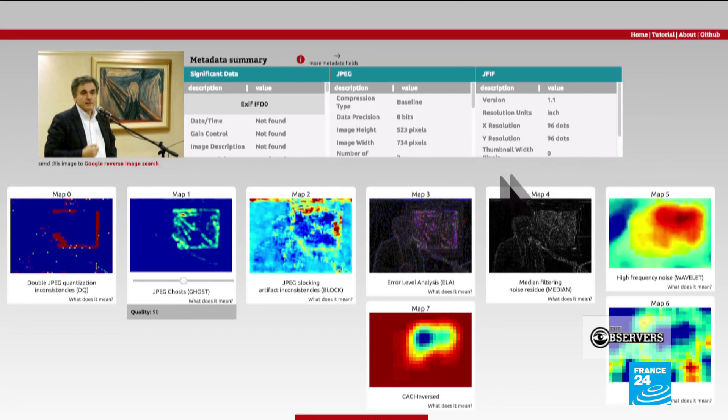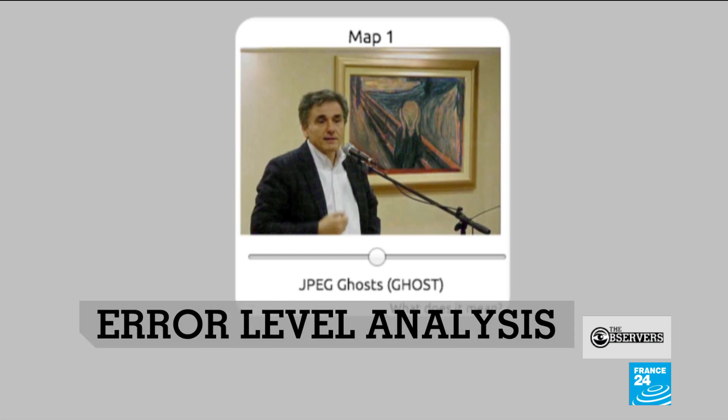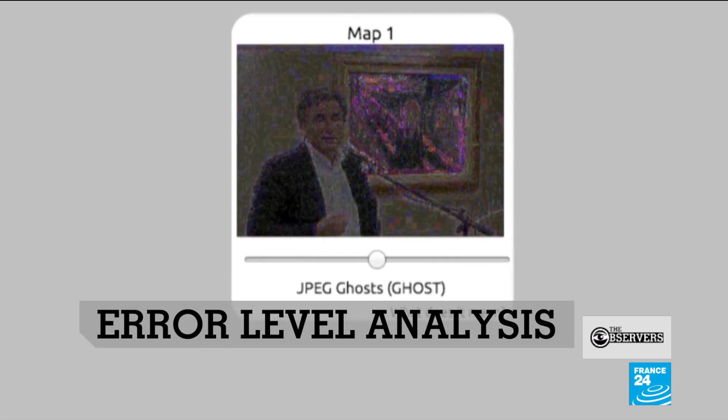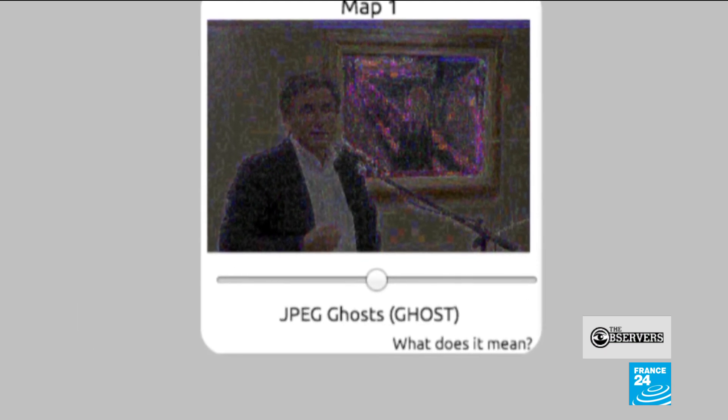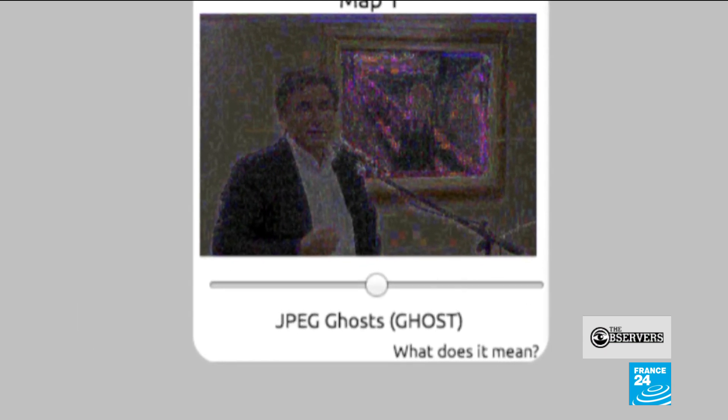Filters like this can detect manipulation, notably via something called error-level analysis. You can clearly see traces of the frame that shows something has been added — the background has been erased. You can see that thanks to the filters.